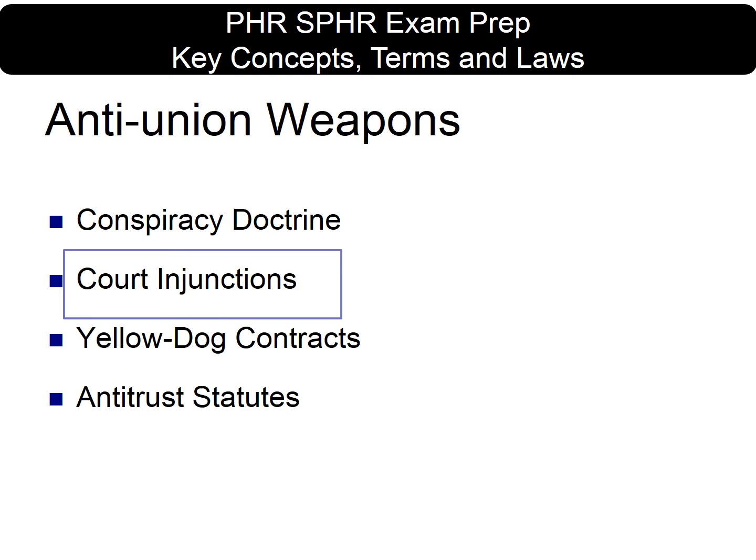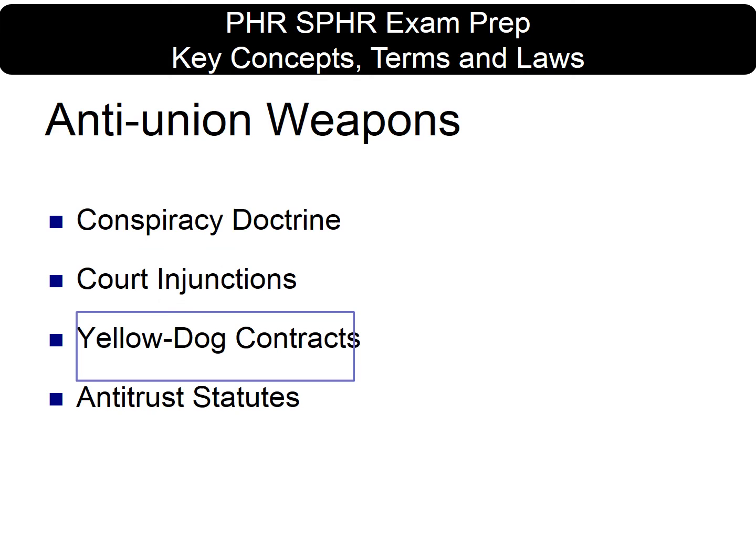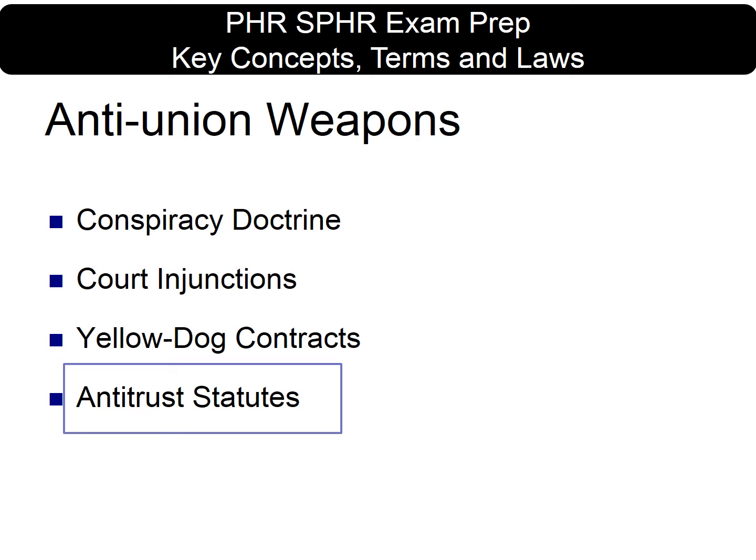In most cases, an injunction is used to protect property rights, which include the rights to hire workers, to sell goods, and to run a business in a profitable manner. A yellow dog contract is a statement employees were required to sign in which they agreed not to join a union.